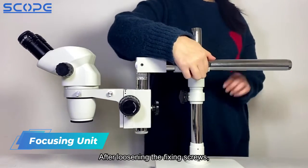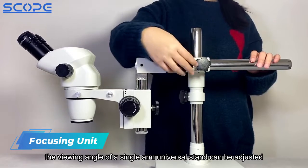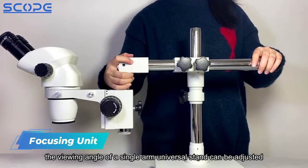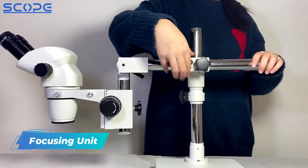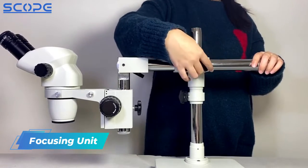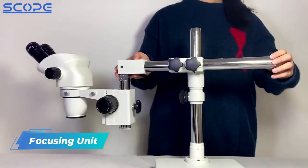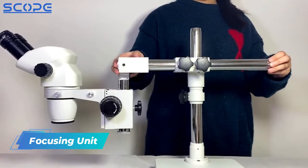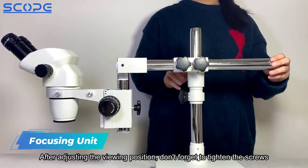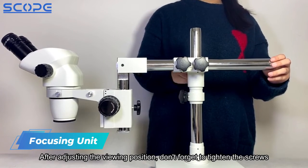After loosening the fixing screws, the viewing angle of the single arm universal stand can be adjusted. After adjusting the viewing position, don't forget to tighten the screws.